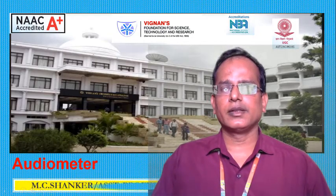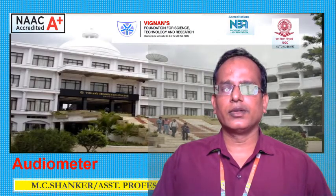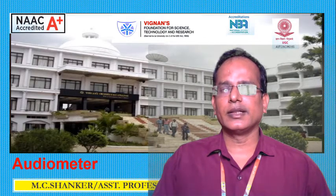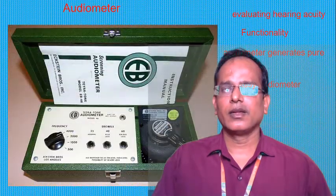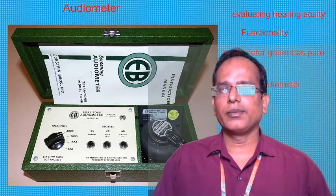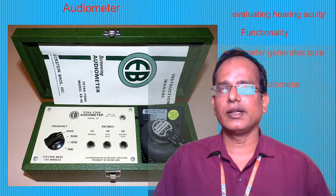Good morning students. Today we are going to learn about the audiometer. The audiometer is used to identify hearing loss. There are two types of tests available: pure tone conduction and speech conduction tests, both used to measure hearing loss.